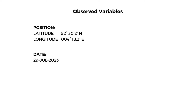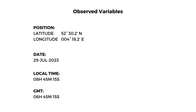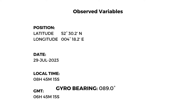...on July 29, 2023, at 08:45:15 local time, which is two hours in advance of Greenwich Mean Time. We observed the gyro bearing of the sun to be at 89.0 degrees.